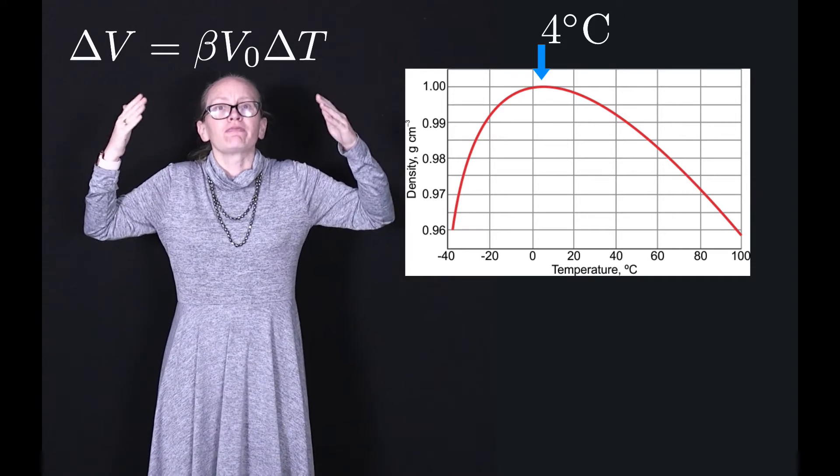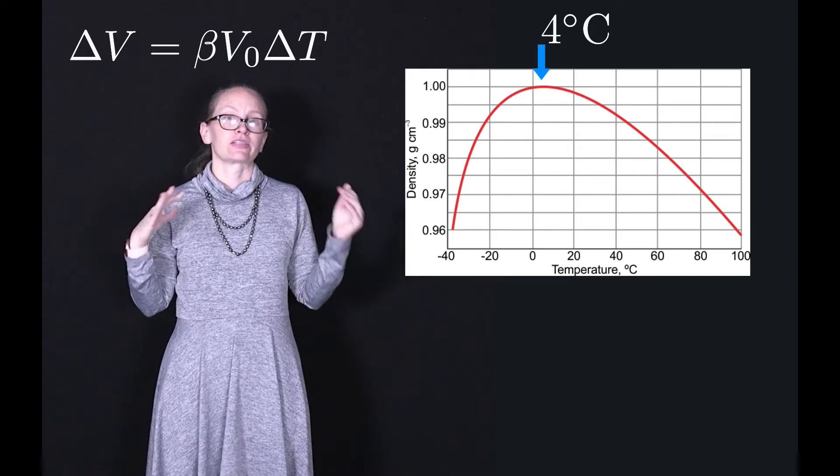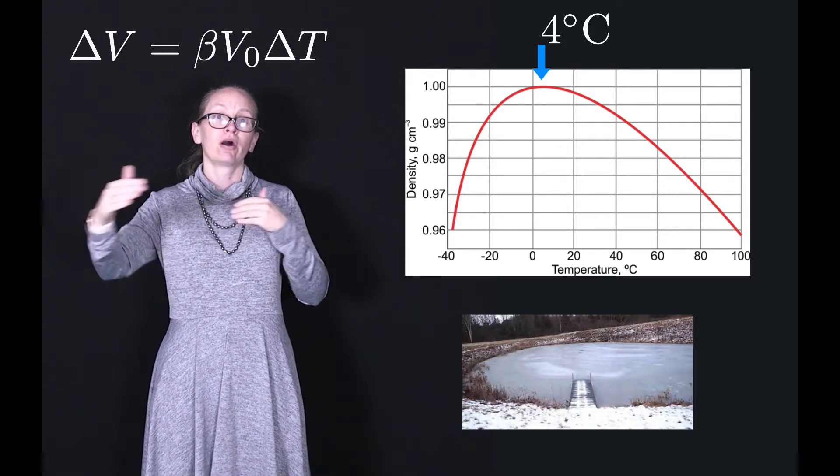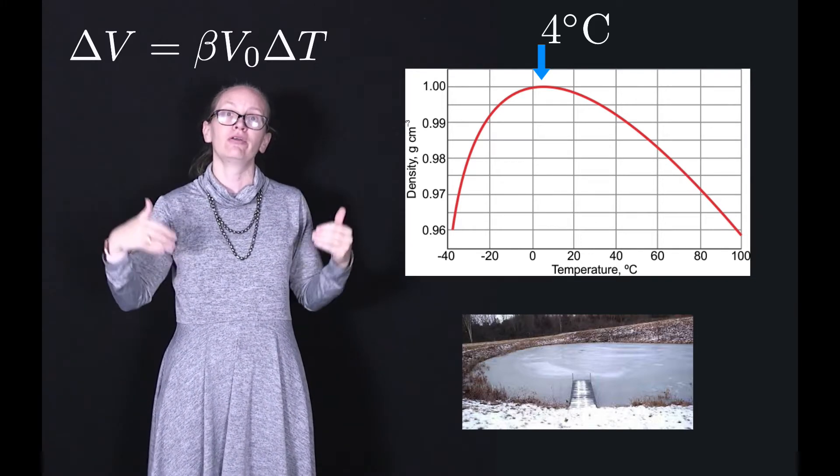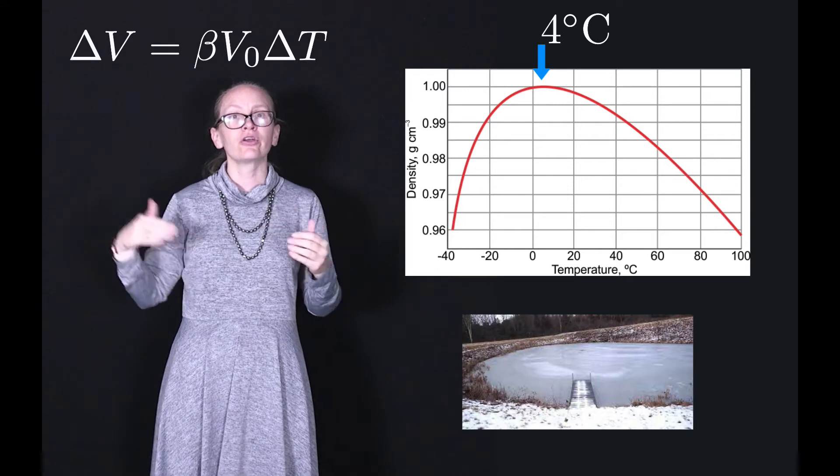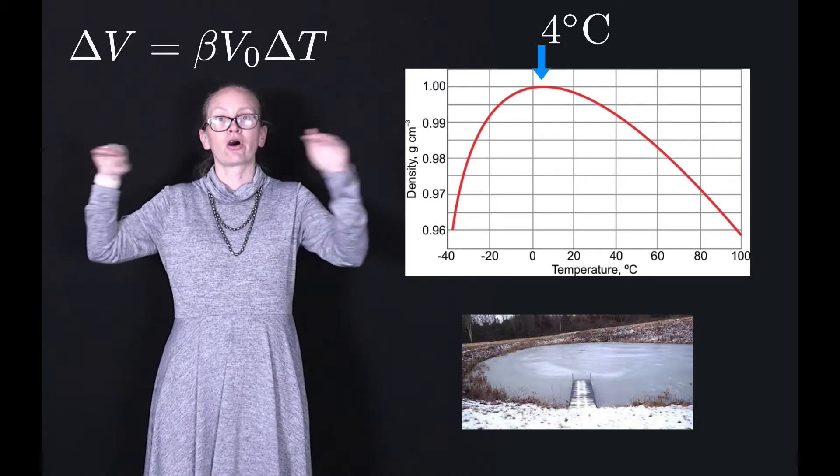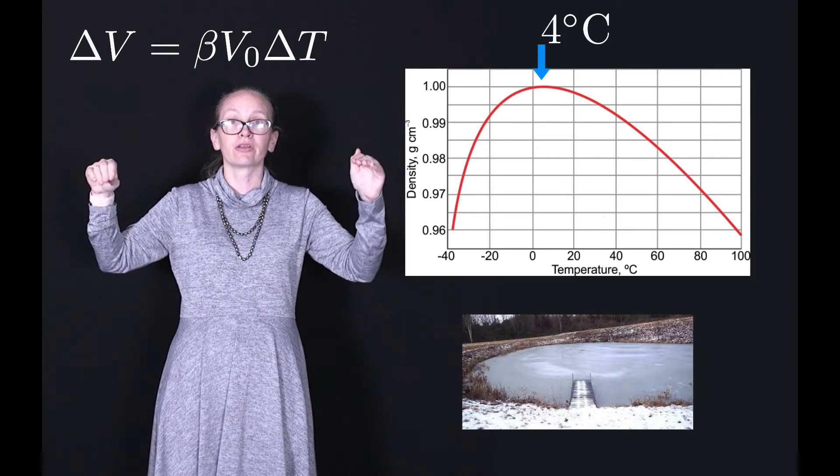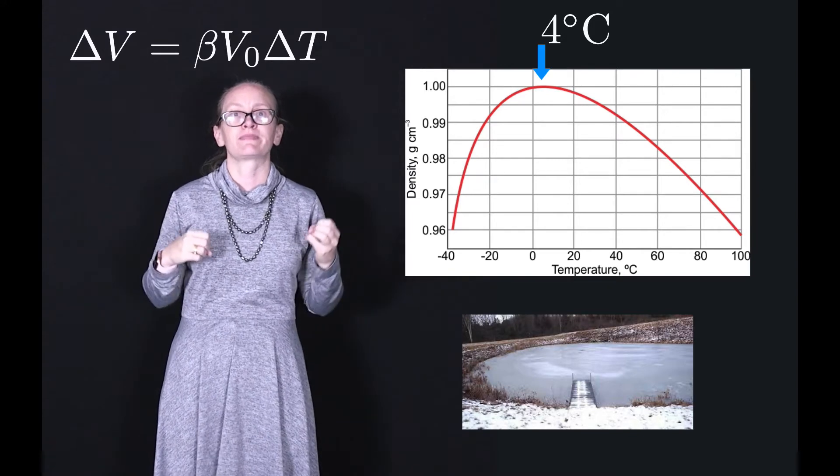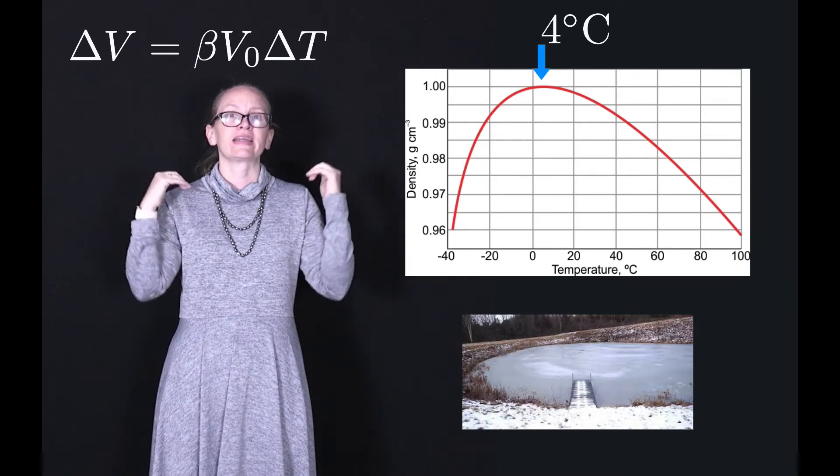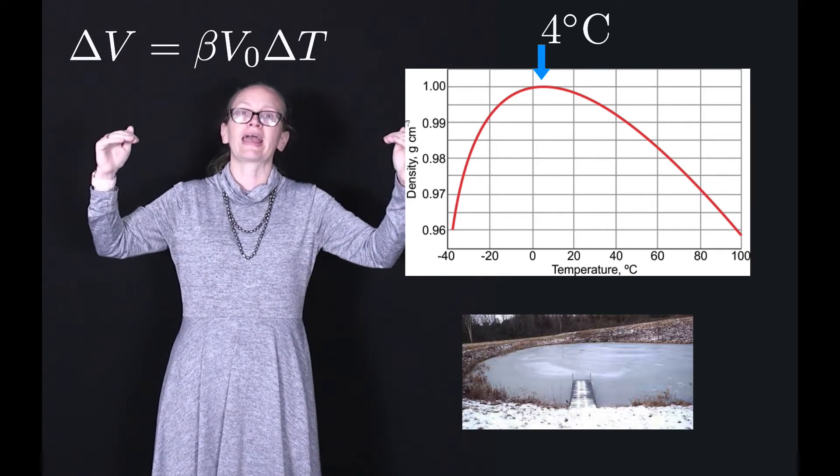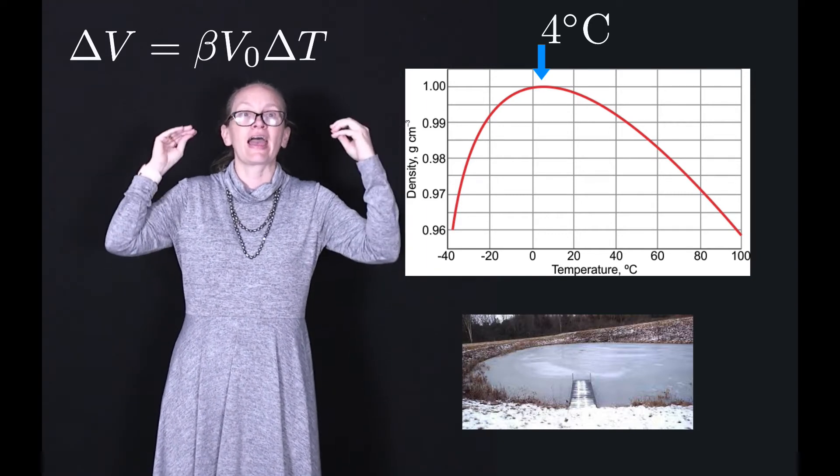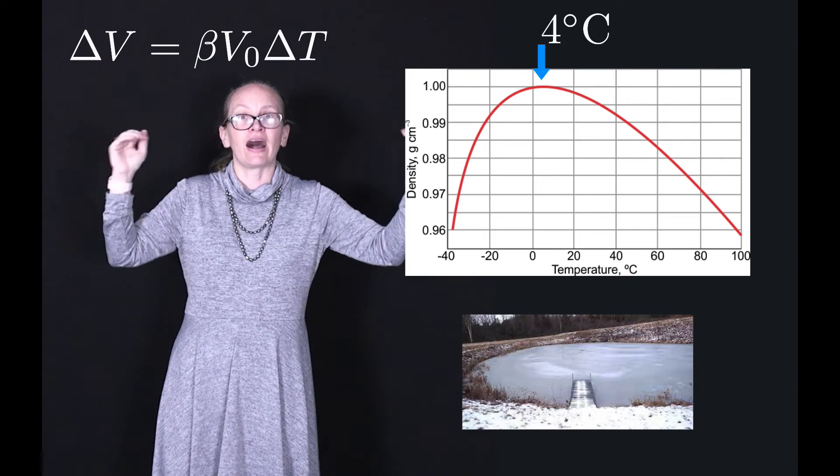Now you've probably actually seen this as well. If you see a pond on a cold day, where it's dropped below 0 degrees C, you'll notice that the ice forms on the top of the pond. So this is because the colder water is now less dense and so floats on top. So that top layer is the coldest layer and that is where the ice forms.